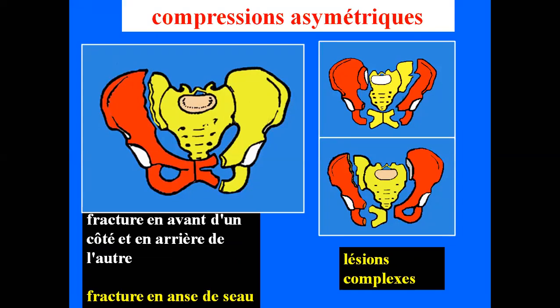Les vecteurs de force ne sont pas toujours symétriques. On peut avoir des compressions asymétriques dans le cas d'éboulements de bâtiments, d'accidents de mines ou de tremblements de terre. Cela donne des lésions multiples qui peuvent s'associer. On décrit une fracture particulière appelée fracture en anse de seau : en avant une fracture des branches pubiennes d'un côté, et en arrière une lésion de la sacro-iliaque ou de l'iliaque controlatéral.